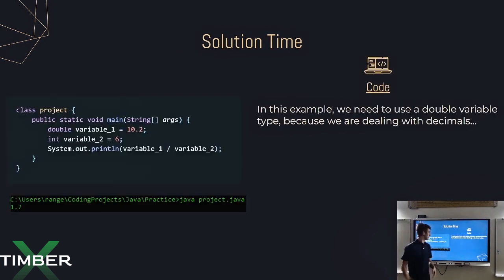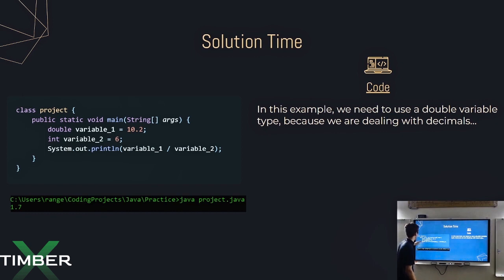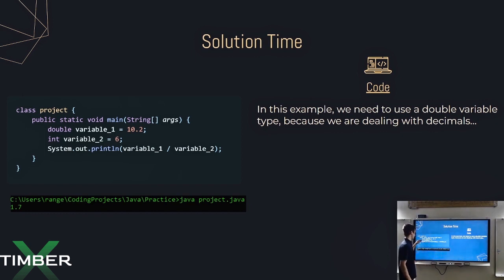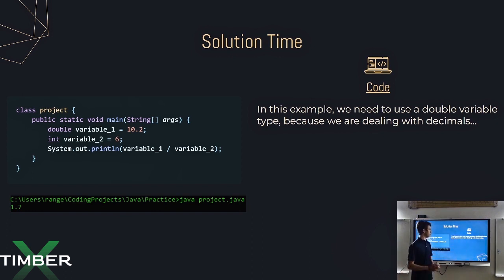Here is the solution. We define the first variable as a double with the variable name variable_one, set equal to 10.2. We use a double because doubles are the data type for decimals, whereas int is just for non-decimal values. Then we define variable_two and set it a value of six. We divide the two, print the output, and there it is: 1.7. In this example, we had to use double because we're dealing with decimals.